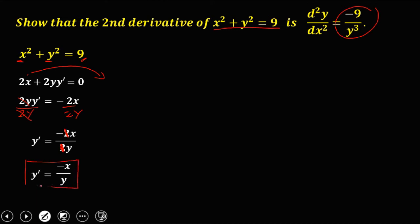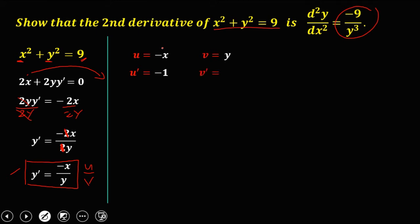This is the first derivative. To get the second derivative we use the quotient rule on y' = -x/y, where u is negative x and v is y. The derivative of u is negative 1, and the derivative of v is y'.